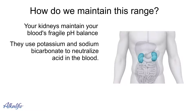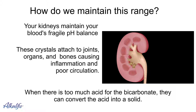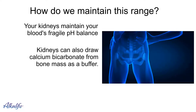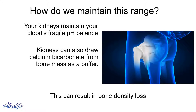Your kidneys maintain your blood's fragile pH balance. They use potassium and sodium bicarbonate to neutralize acid in the blood. When there's too much acid for the bicarbonate, they can convert the acid into a solid. These crystals attach to joints, organs, and bones, causing inflammation and poor circulation. The kidneys can also draw calcium bicarbonate from bone mass as a buffer, which can result in bone density loss.